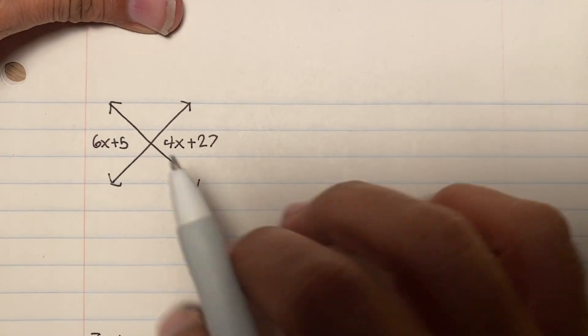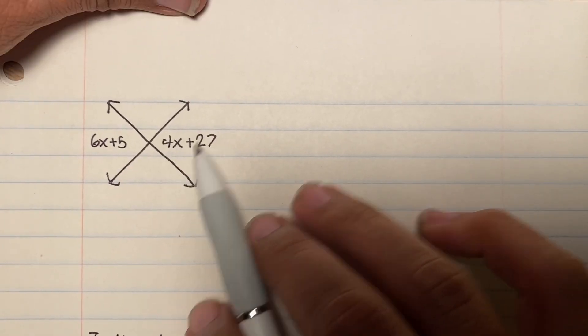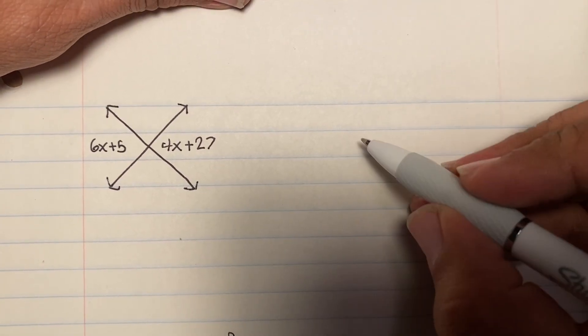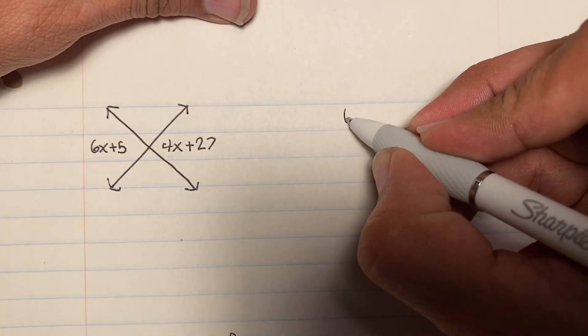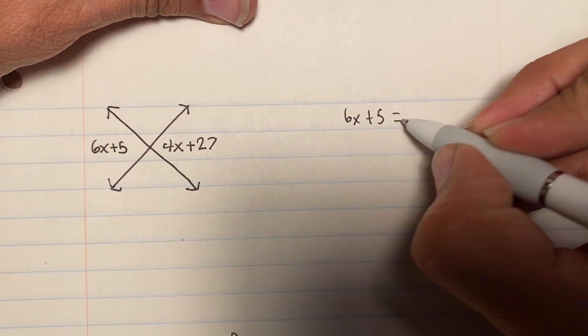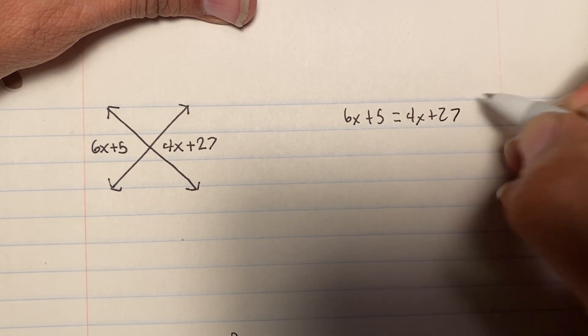Alright, here we go. I'm going to solve this problem using a two-column proof. I'm going to start with 6x plus 5 equals 4x plus 27.